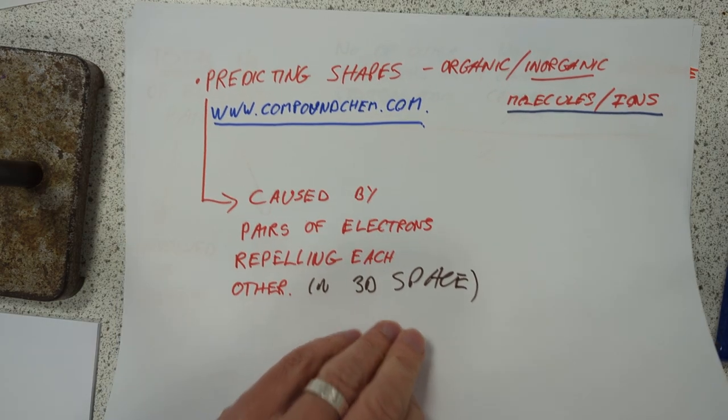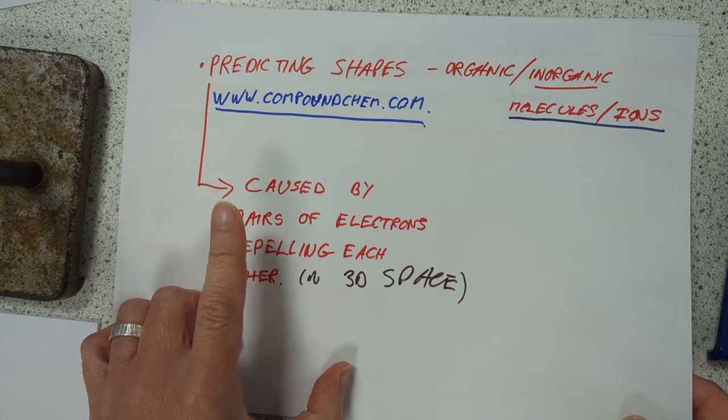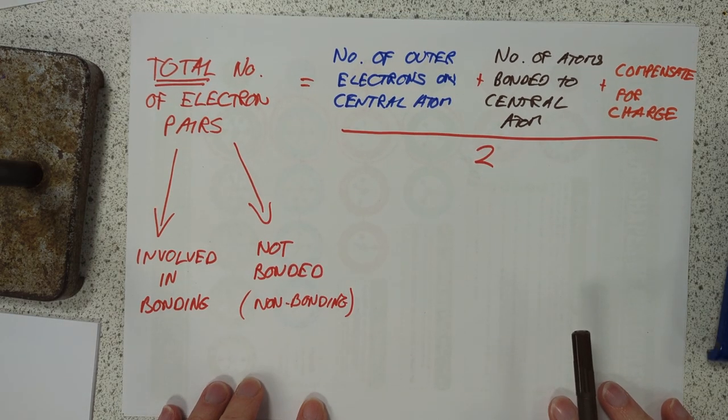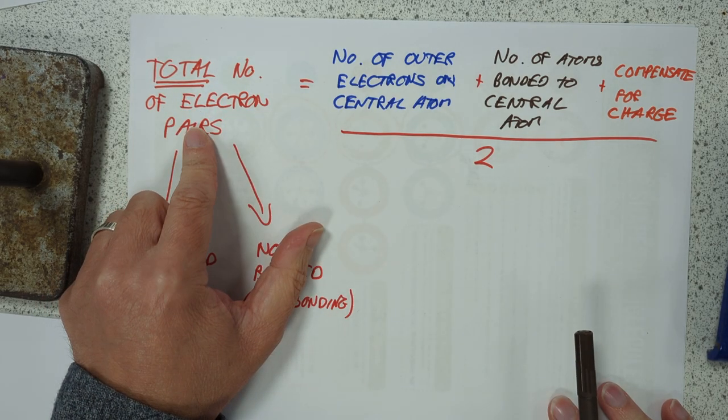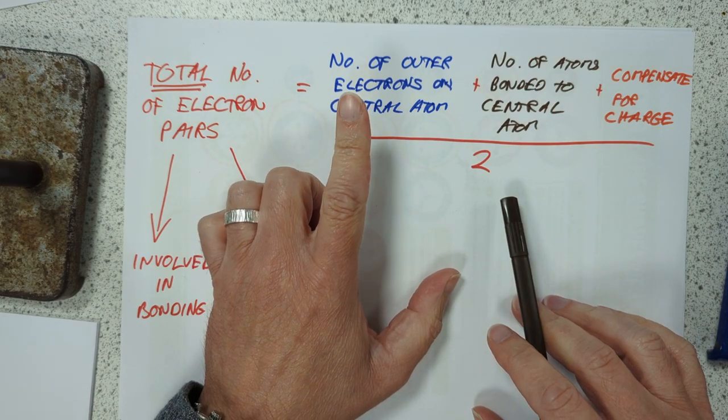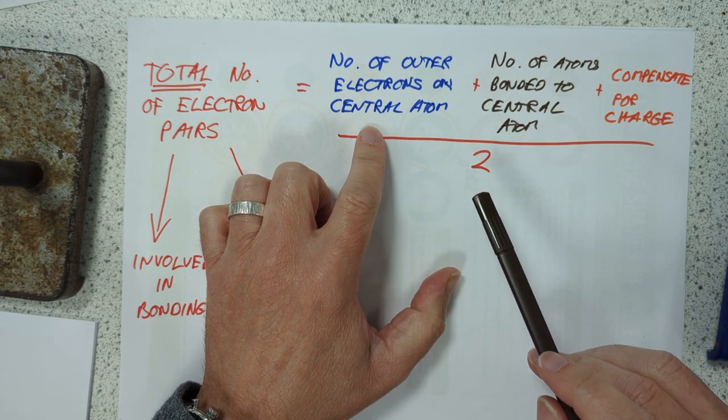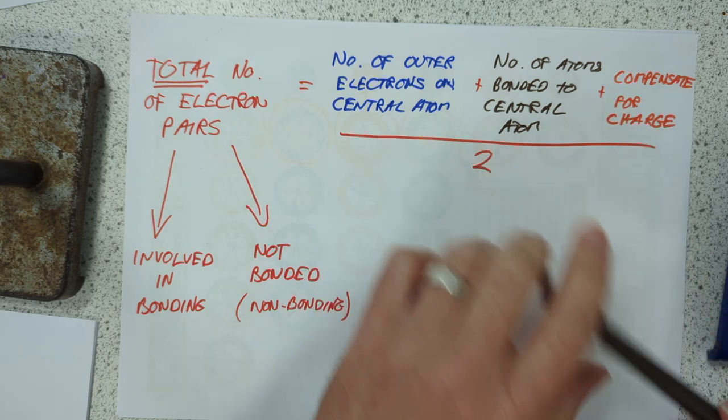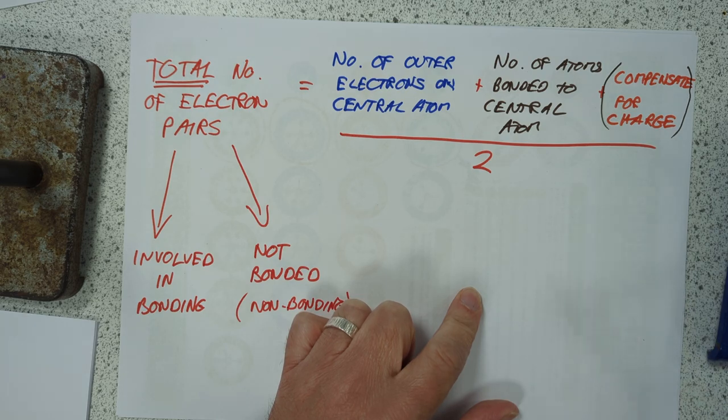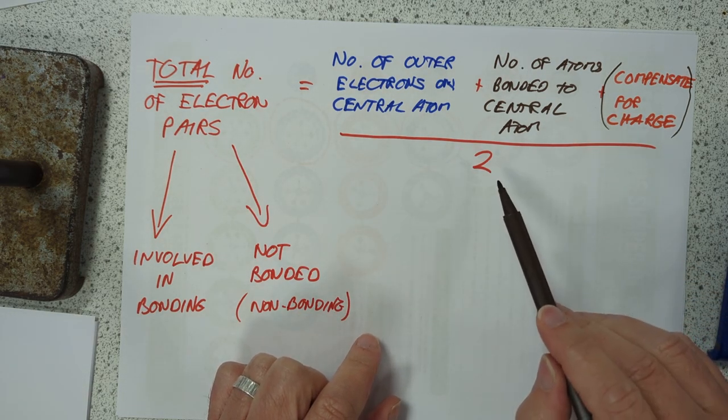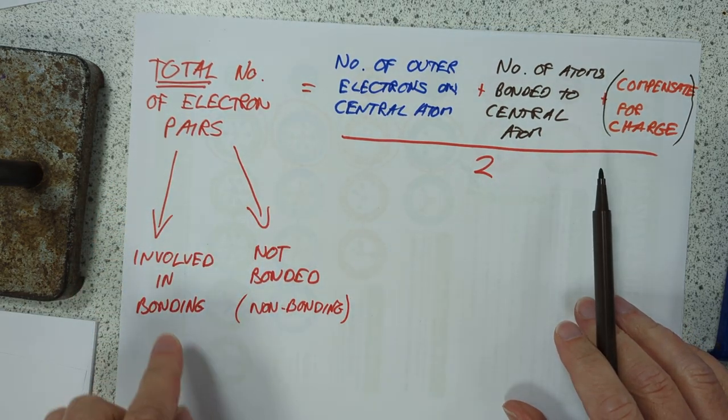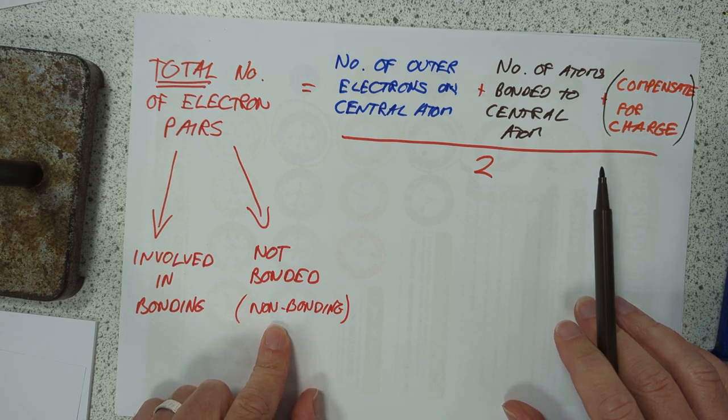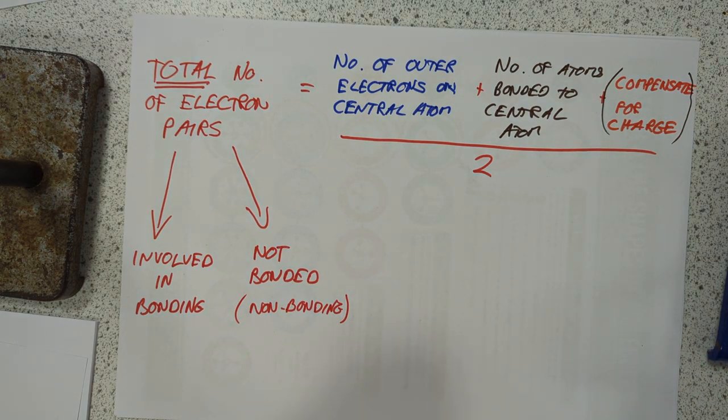We need a little equation to calculate, because it's caused by pairs of electrons, you need to be able to work out how many pairs of electrons are involved in a particular thing. And here is how we work out how many pairs of electrons. The total number of electron pairs in a particular atom or molecule is calculated by taking the number of outer electrons on the central atom of that molecule. You add how many things are bonded to that central atom. And then, if it's an ion, you have to compensate for the charge. I suppose we should put that in a bracket because that doesn't apply to molecules. Once you know this, divide that by two, and that will tell you the total numbers of pairs of electrons. From there, we can look and see how many of these pairs are actually bonded to anything and how many are not bonded to anything. These are called non-bonding pairs.